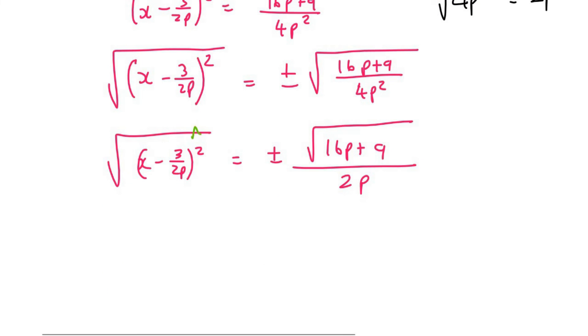Now this square root over here cancels out this 2, and so we're simply left with x minus 3 over 2p equals to plus or minus 16p plus 9 over 2p.